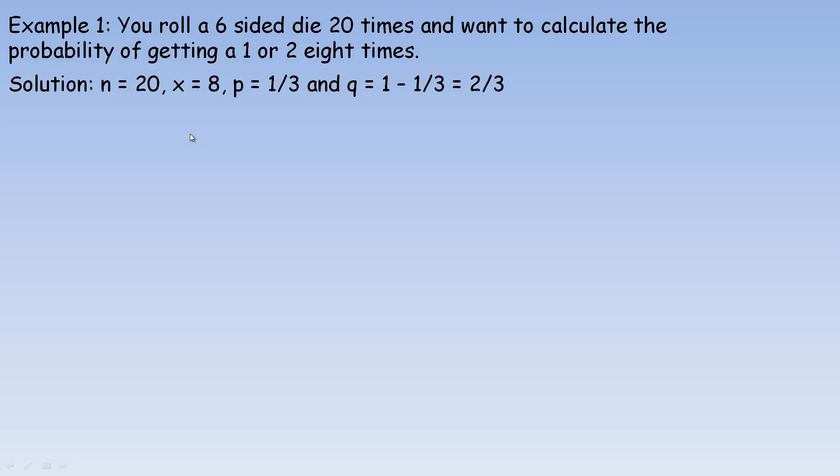Flipping over to example 1 here, you roll a six-sided die 20 times. And you want to calculate the probability of getting a 1 or a 2 eight different times. So we've done it 20 times, so n would be 20. The probability of a 1 or 2 coming up, if it's random, that's 2 numbers out of 6, which reduces to 1/3. So the probability of a success is 1/3. We're trying to find the probability it happens 8 times. That's why little x is 8. And if p is 1/3, to calculate q, you go 1 minus p. So 1 minus 1/3 would be 2/3. So that's all the information we need to use the formula.